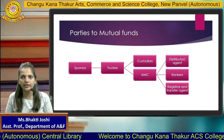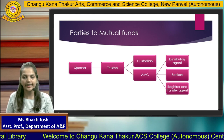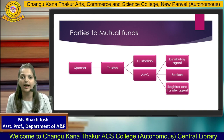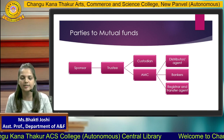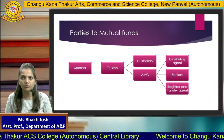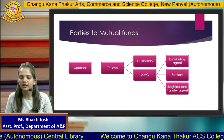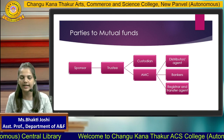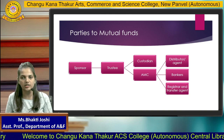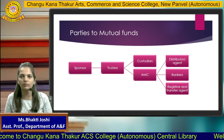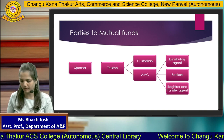The custodian is the person who holds all the money of the asset management company and on a time-to-time basis deploys that money to the asset management company. The AMC — asset management company — is the entity that actually works on classes of investment; the funds collected via the custodian are invested by experts in the AMC. The AMC further has distributors or agents, a banker, and a registrar and transfer agent. These three parties reach out to the normal individual public and investors to have their investment in mutual fund companies.